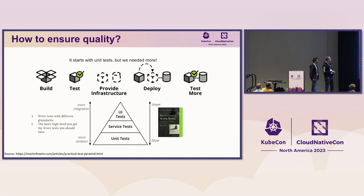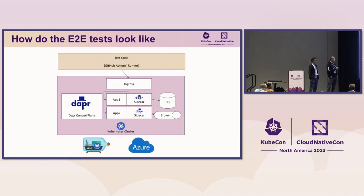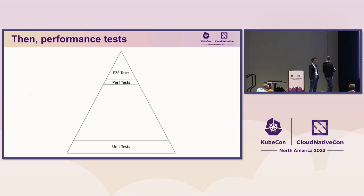The higher you are in the pyramid, the more integration, it's slower, but also flakier. So we cannot just put everything on the end-to-end test part. The next step is performance tests.